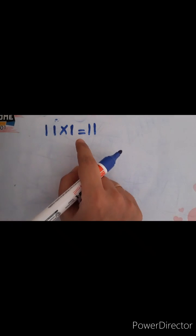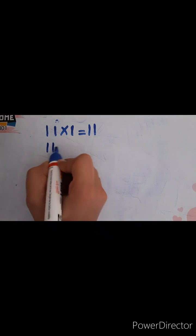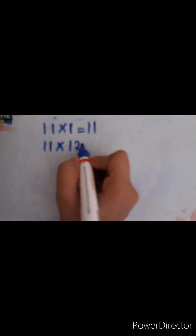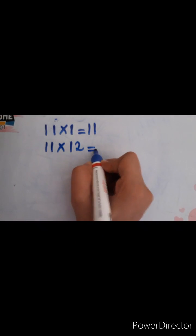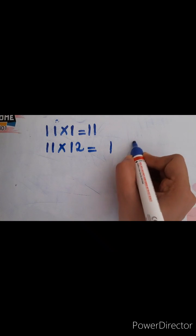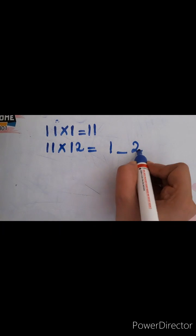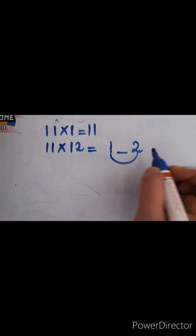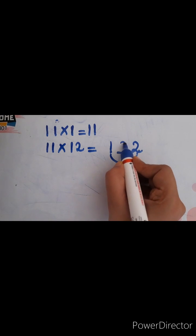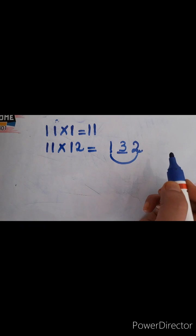What is 11 ones? That is 11. Next, what is 11 into 12? That is — just write 12 like this, leave a small space in between. What is 1 plus 2? It gives you 3. Write 3 in between the 12. So your answer is 132.